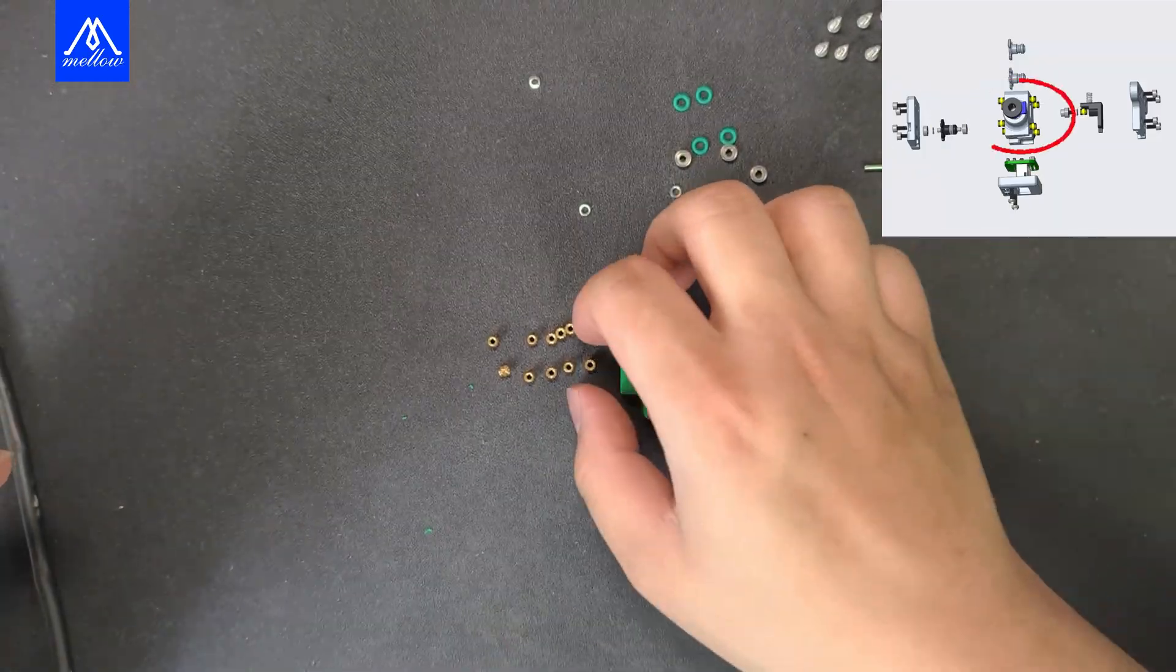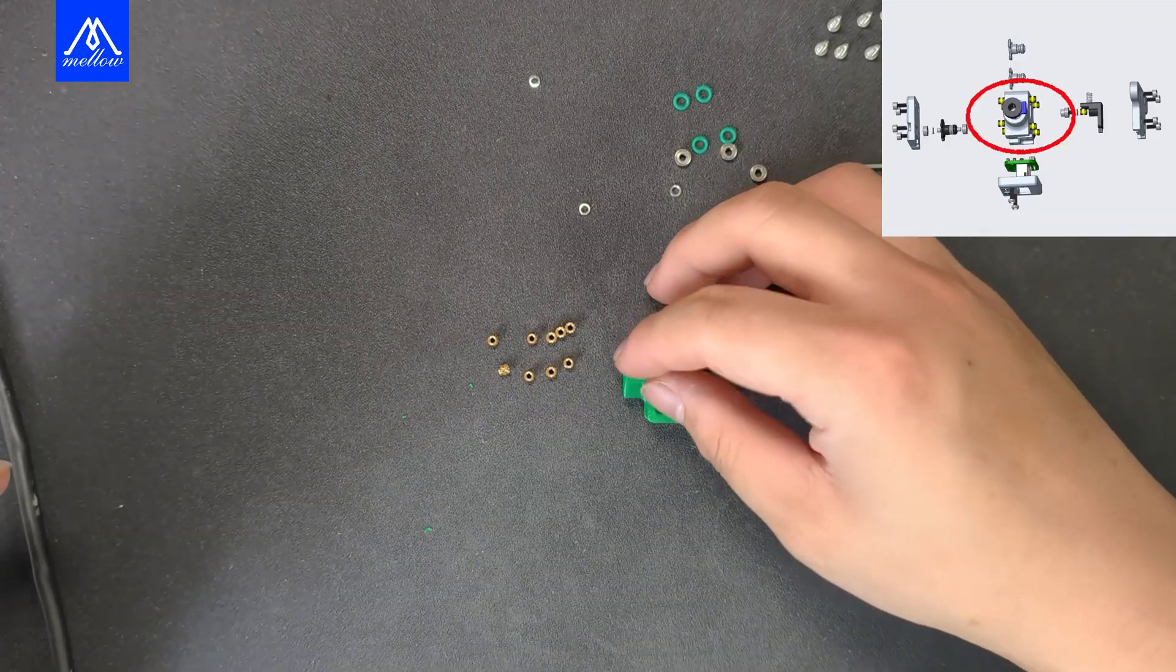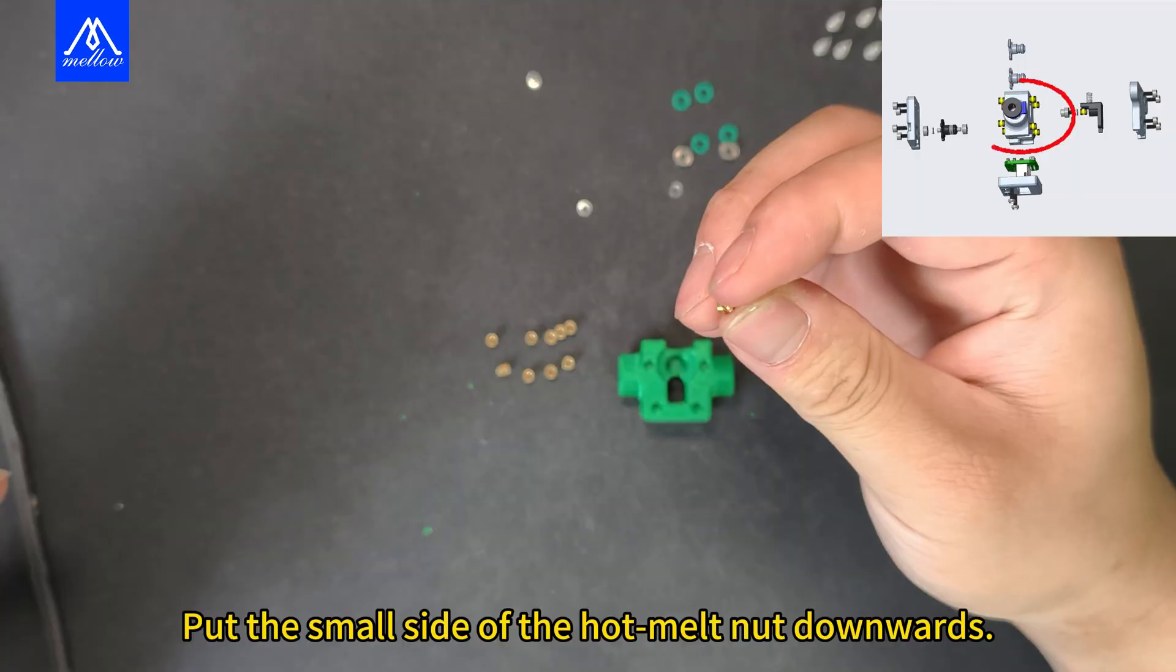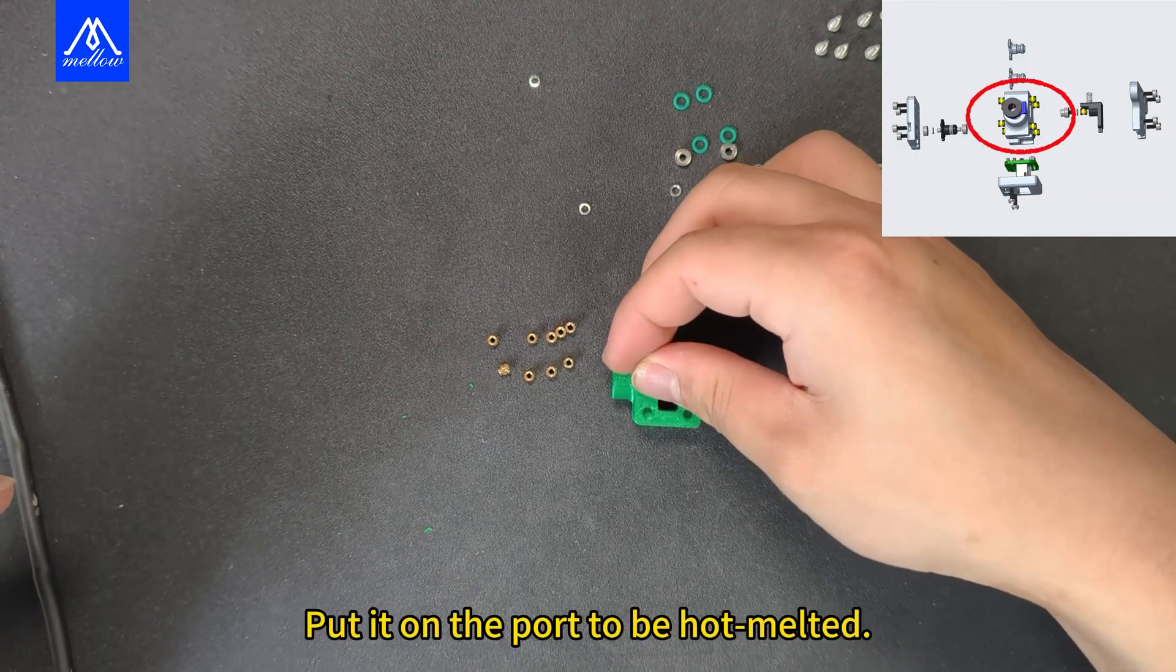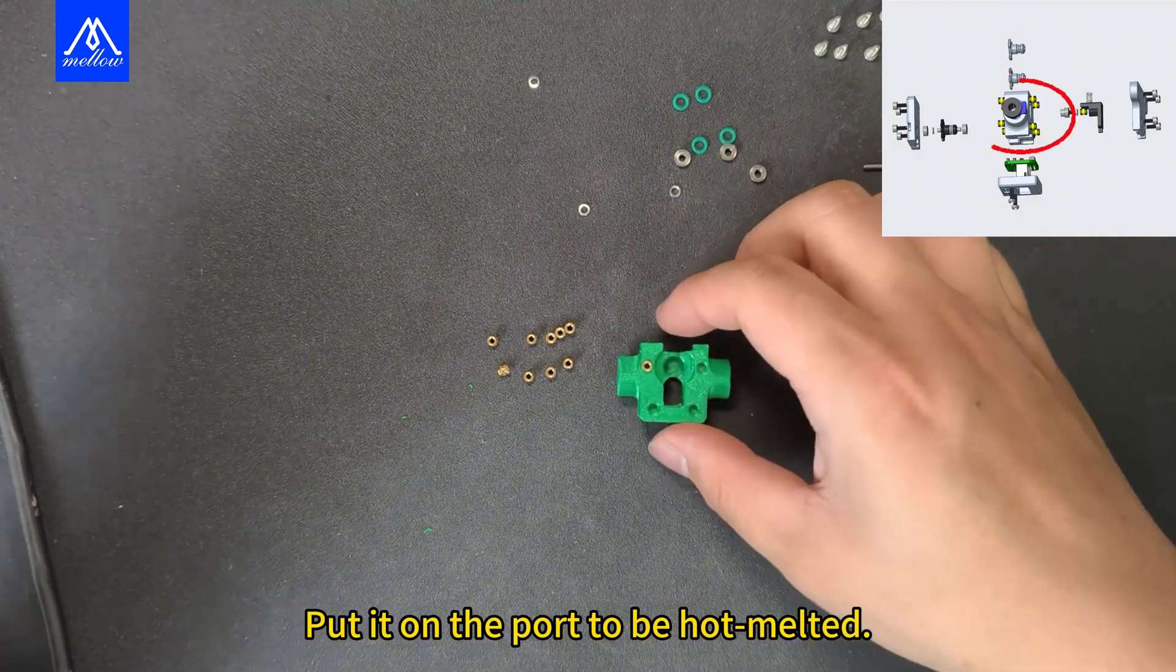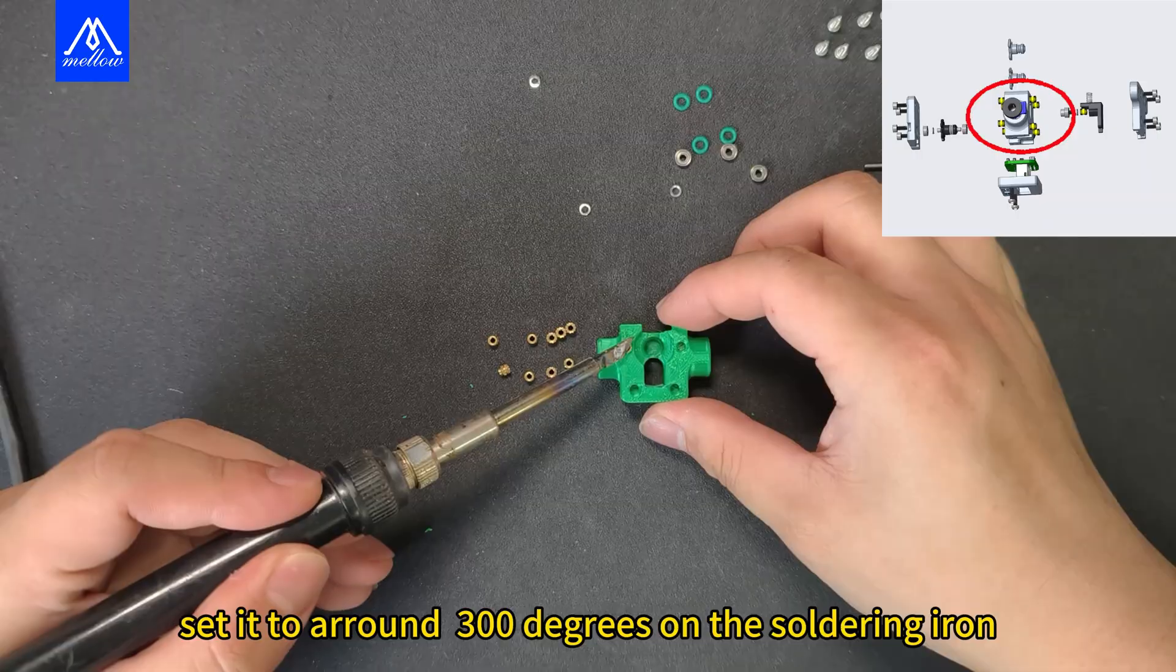Then hot melt. Put the small side of the hot melt nut downwards. Put it on the port to be hot melted. Set it to around 300 degrees on the soldering iron. Press it down.